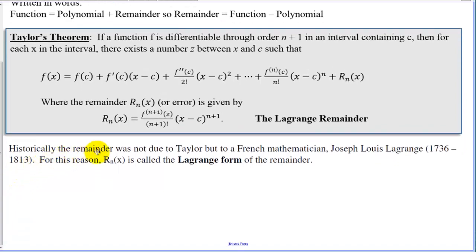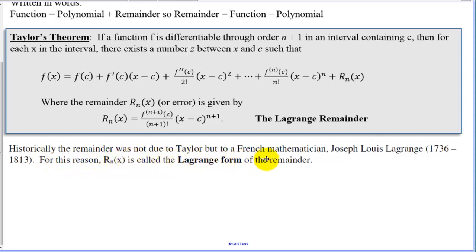Historically, the remainder was not due to Taylor, but to a French mathematician, Joseph Louis Lagrange (1736–1813). For this reason, the remainder is called the Lagrange form of the remainder.